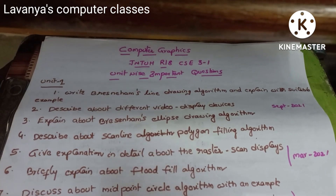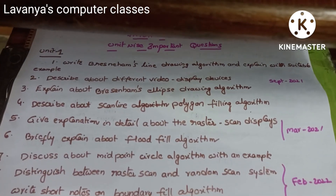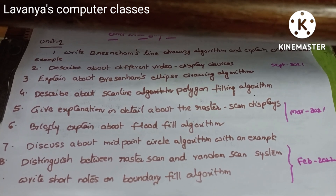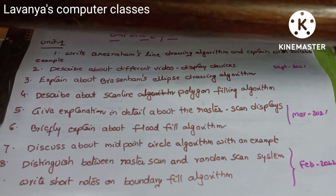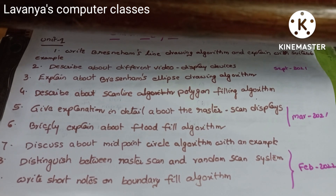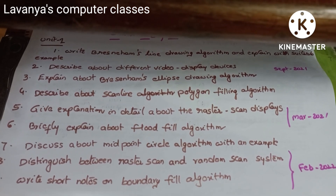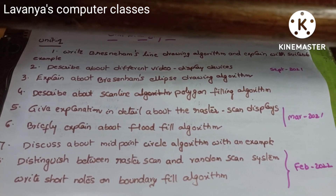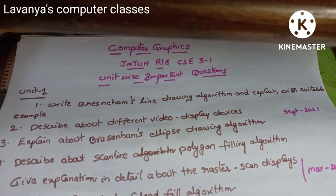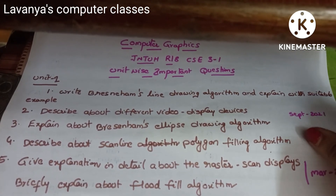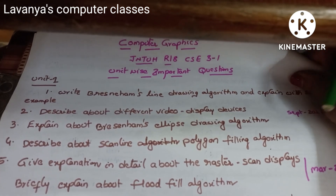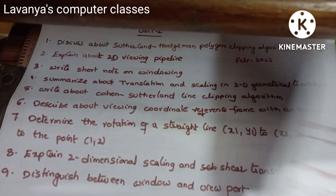Next, discuss about midpoint circle algorithm with an example. Distinguish between raster scan and random scan systems. And lastly, write short notes on boundary fill algorithm. These three questions came in February 2022. Unit 1 has a large number of questions, but all are very very important, so read all of them if you select Unit 1.